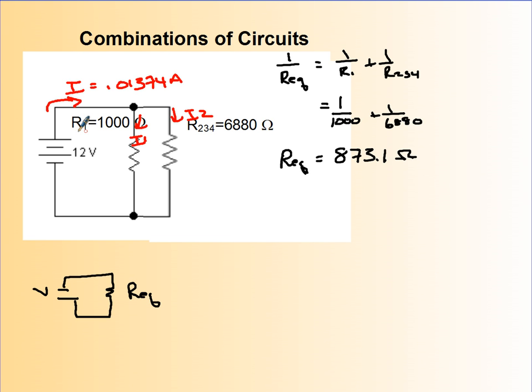So let's figure out what I1 is. I know they both R1 and R234 have a potential difference of 12 volts. So I know V equals IR. So I know I1 is going to be V divided by R1. So V is 12 volts divided by 1000, which is 0.012 amps.